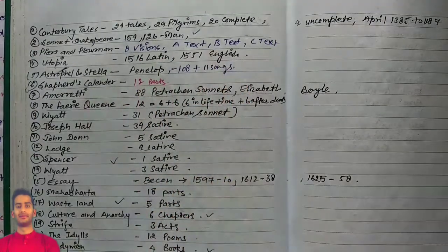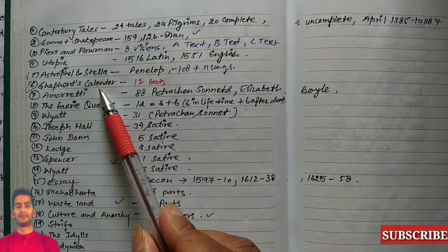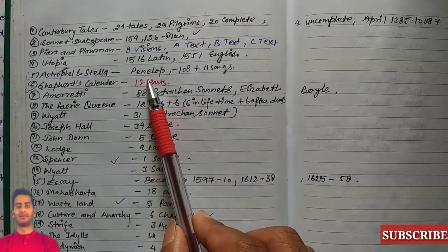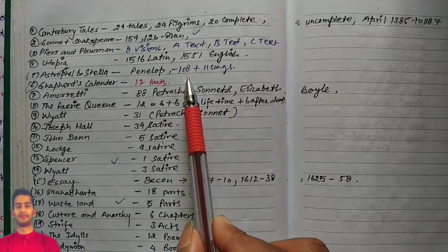Astrophil and Stella: written for Penelope, and it has 108 sonnets plus 11 songs.